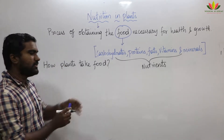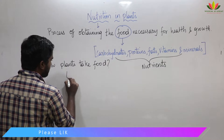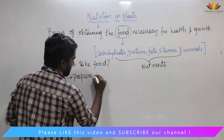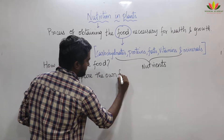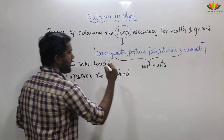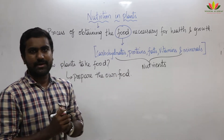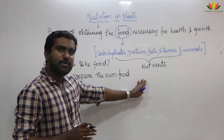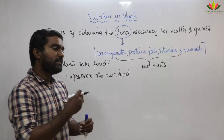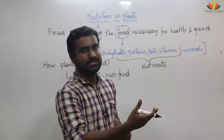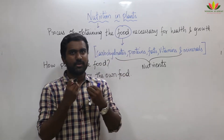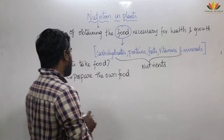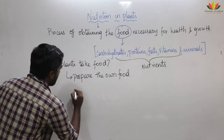How do plants take food? The plants will prepare their own food. Animals, on the other hand, will depend upon other organisms. Based upon the mode of nutrition, there are two categories.